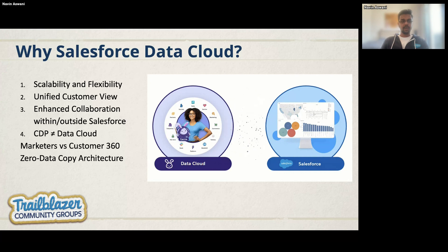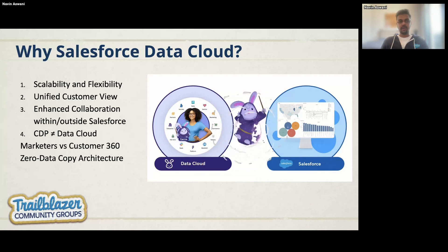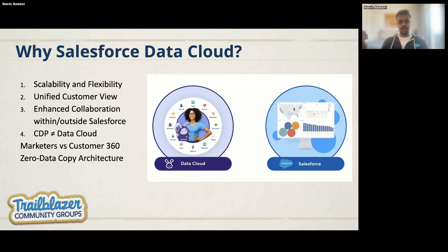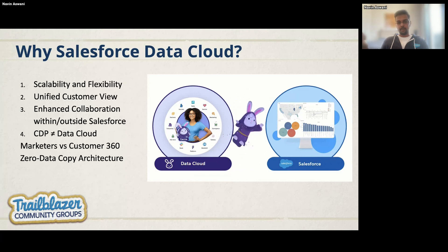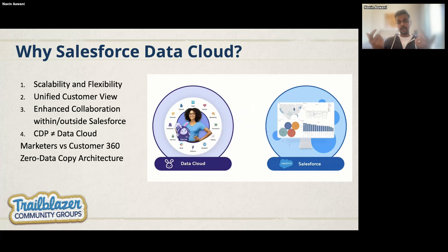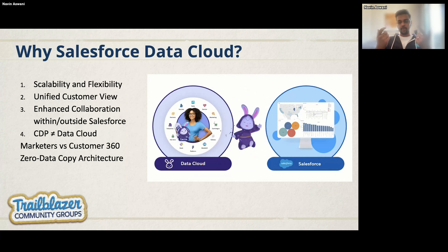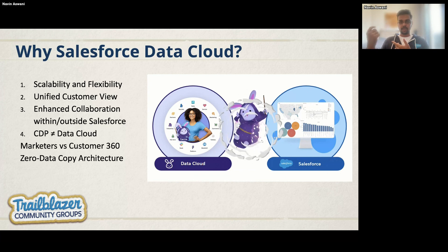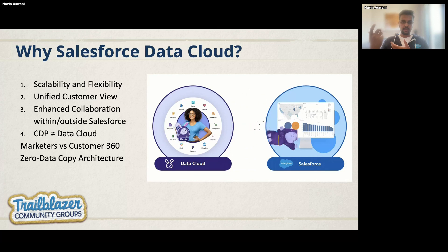The next reason is unified customer view — you'll hear the terms unification and identity multiple times in this course. Unification means: suppose I am a lead coming from a marketing campaign or from Sales Cloud, I'm coming from multiple clouds. In Data Cloud, I won't be considered as separate customers — I'll be unified as a single profile, a single identity in the final dataset, avoiding duplication of data.